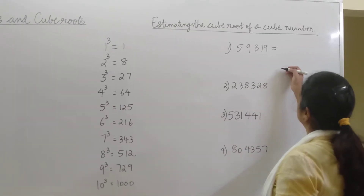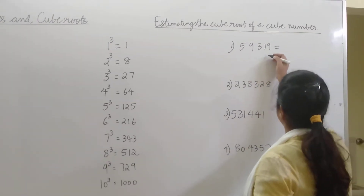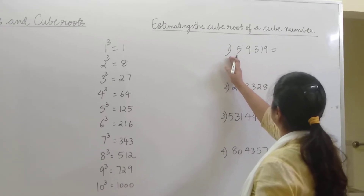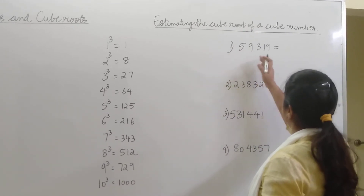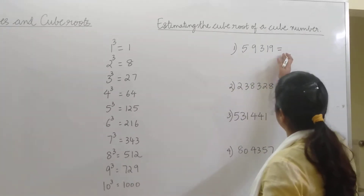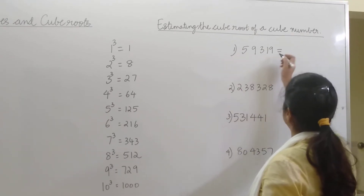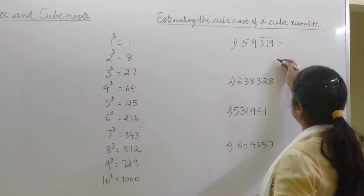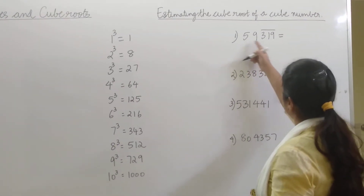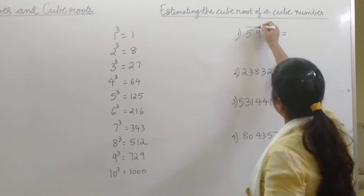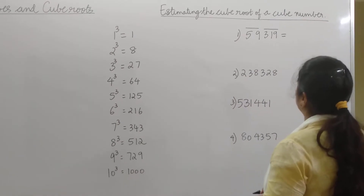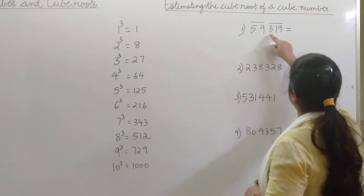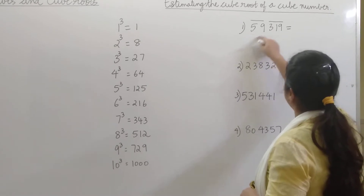We need to first group the digits in 3's from right to left. So 319 makes the first group. We are left with only 2 digits — 59 makes the second group. So we have the first group 319 and the second group 59.